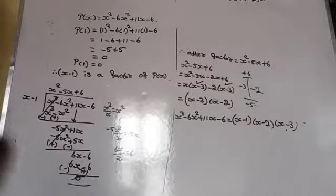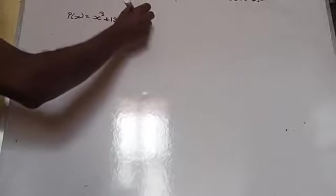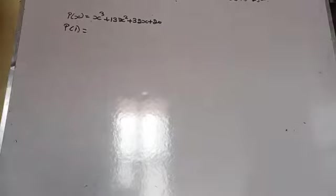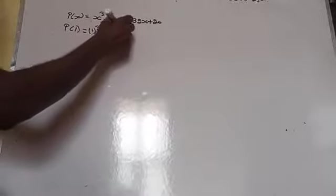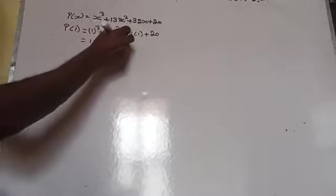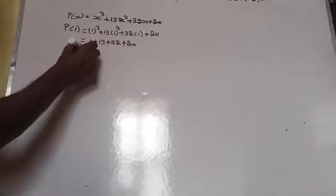Now we will do one more question. Factorize x³ + 13x² + 32x + 20. P(x) = x³ + 13x² + 32x + 20. First, find P(1): replace x by 1 everywhere. That is 1 + 13 + 32 + 20 = 66. Since 66 ≠ 0, therefore (x - 1) is not a factor.